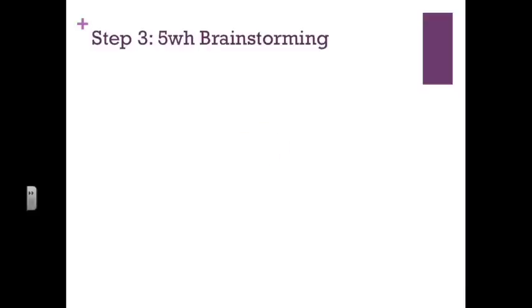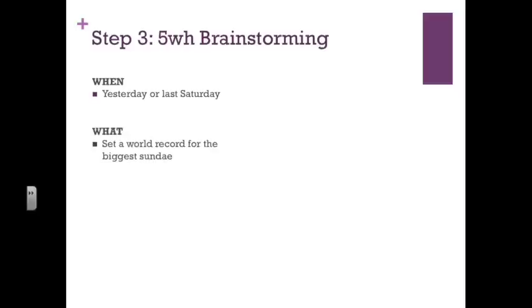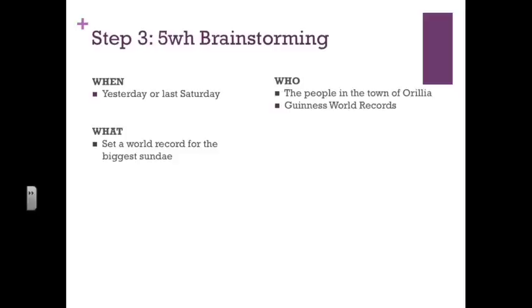The tip here is to use the space provided to brainstorm your ideas. Step three is to brainstorm your ideas in the rough notes section, which is not scored by the markers. We're going to start with the 'when,' which could be yesterday or last Saturday — but don't go any further back than that. Then look at the 'what': the world record was set for the biggest sundae. 'Who' was involved? The townspeople and the Guinness Book of Records people. 'Where'? We decided on Aurelia. These are details you're going to have to make up for your article, and these four will form the lead sentence.